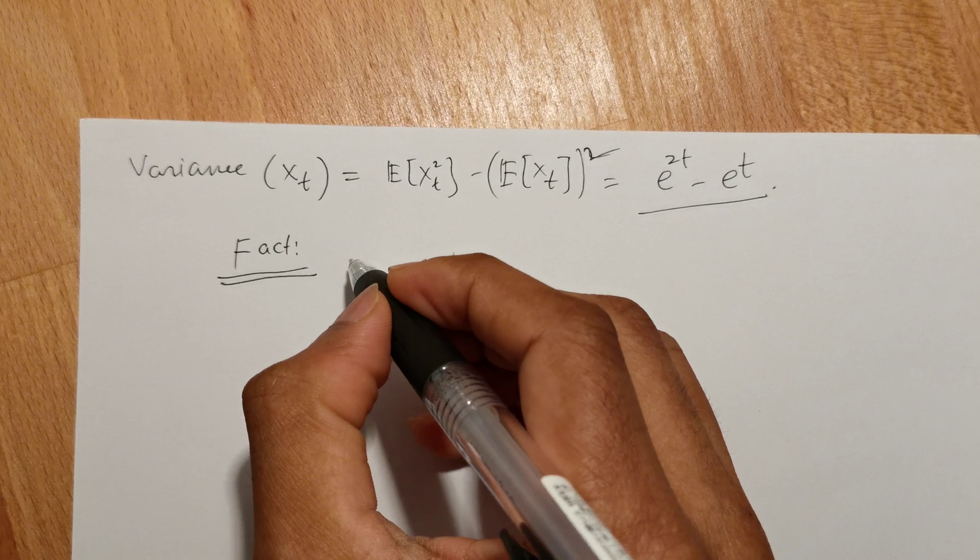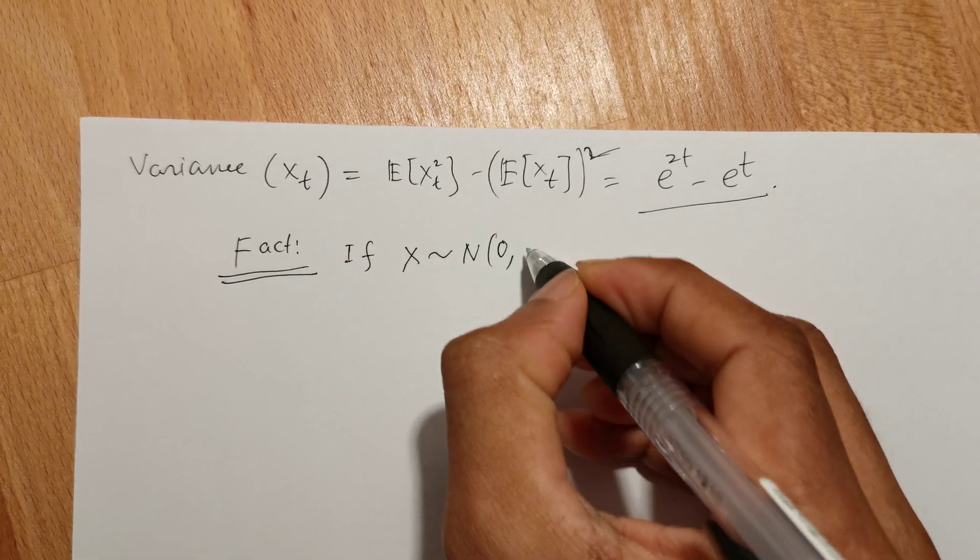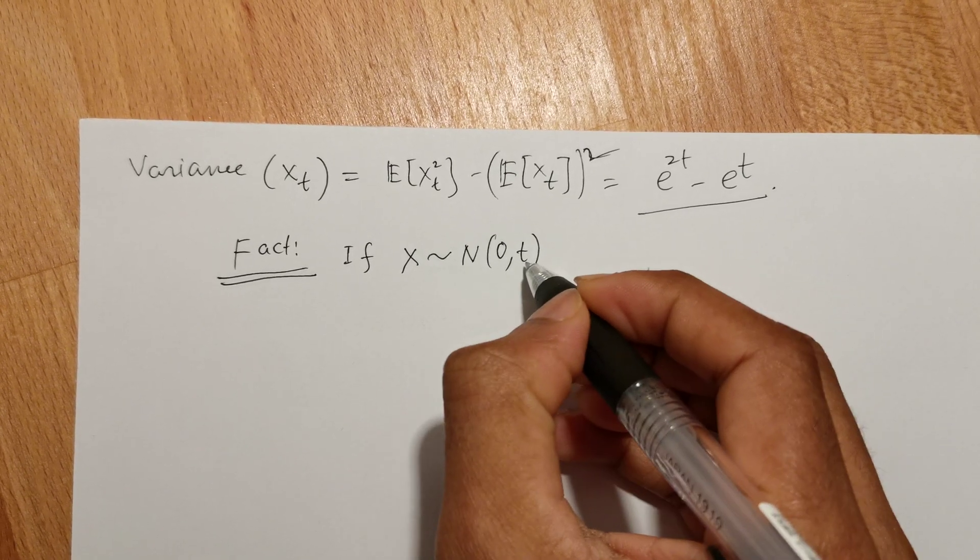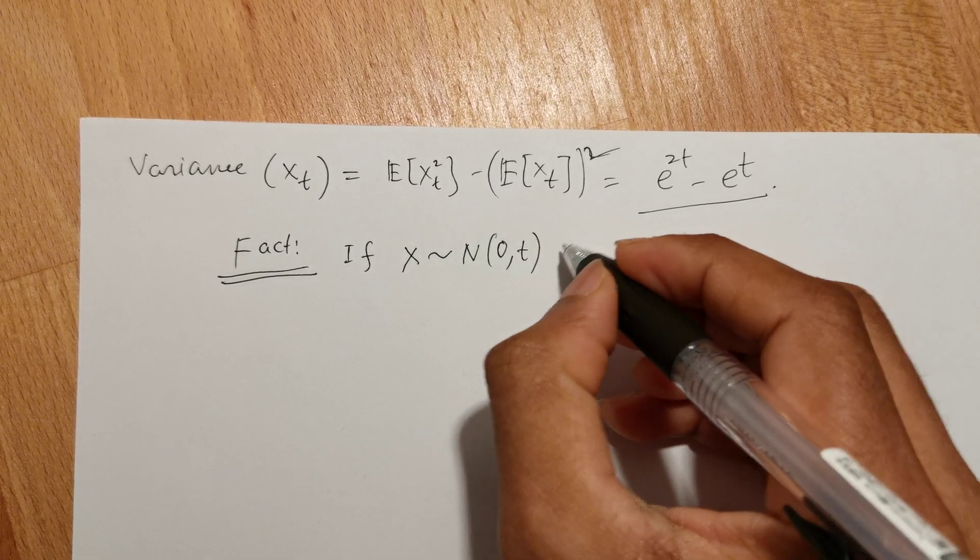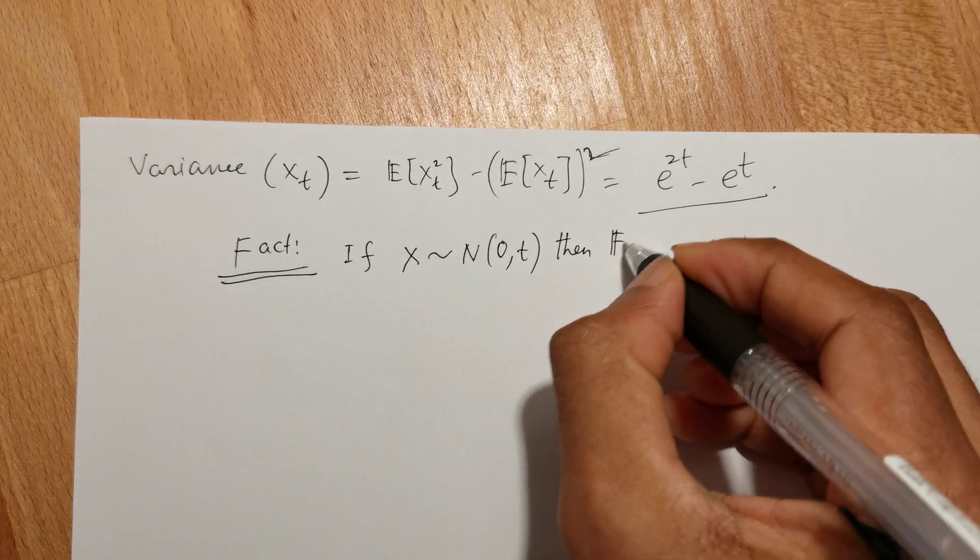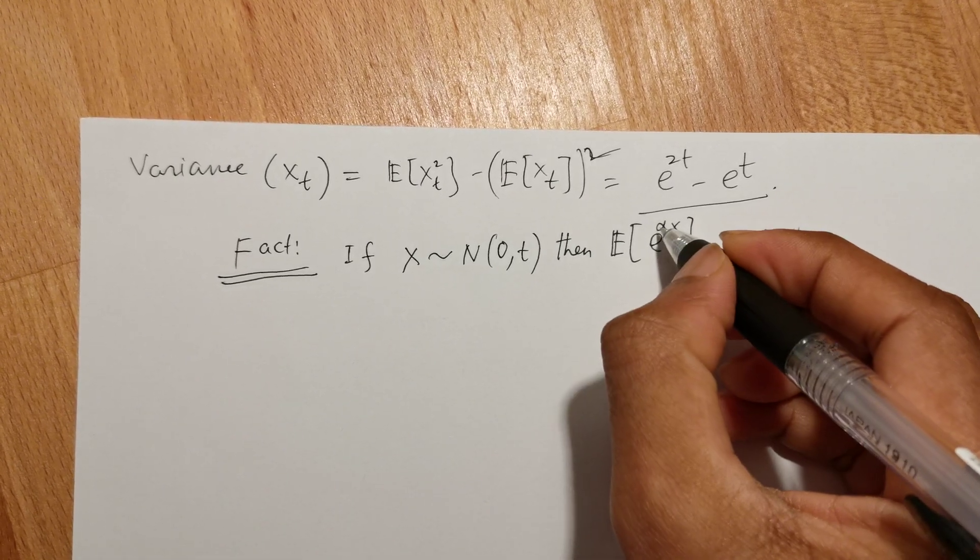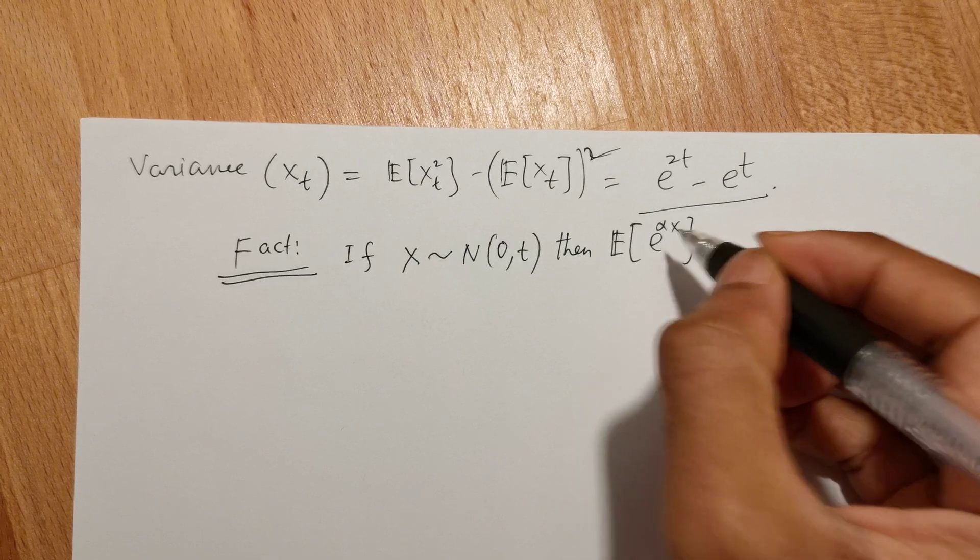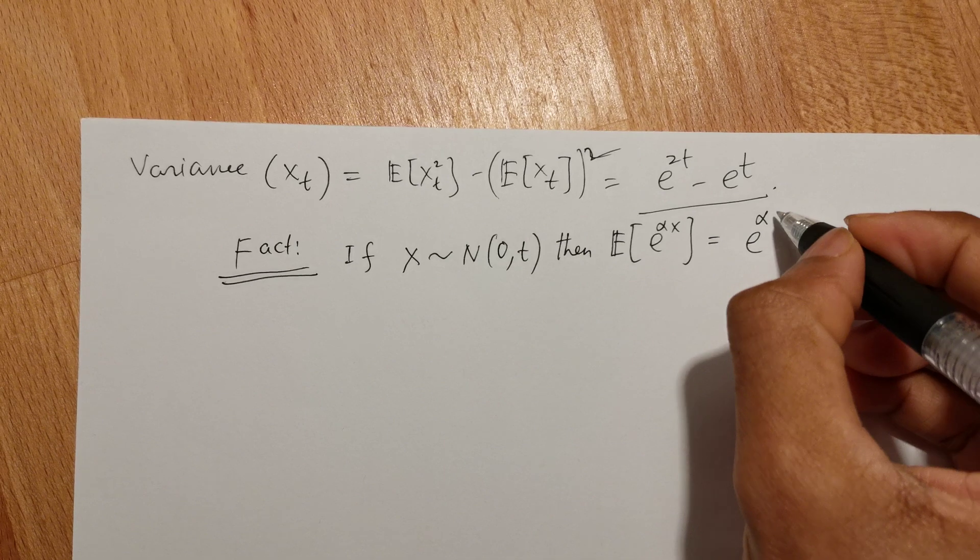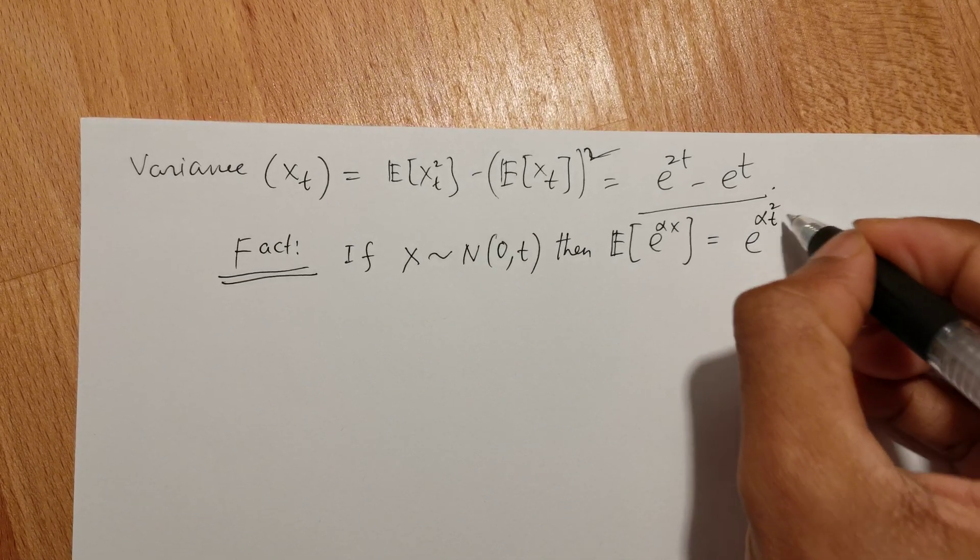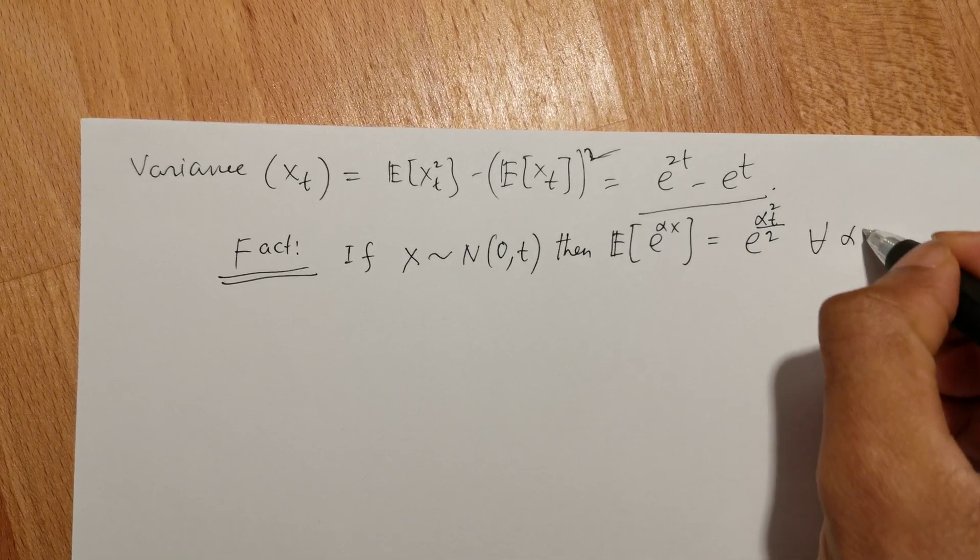If you want to prove this yourself, you can check using this fact: if X is a normally distributed random variable with mean 0 and variance t, then E[e^(αX)] = e^(α^2 t/2) for all α ≥ 0.